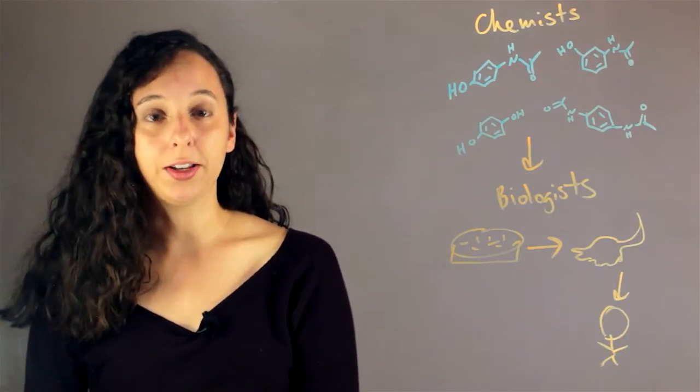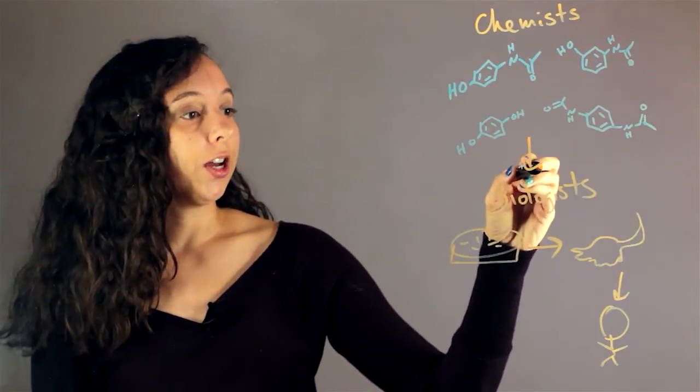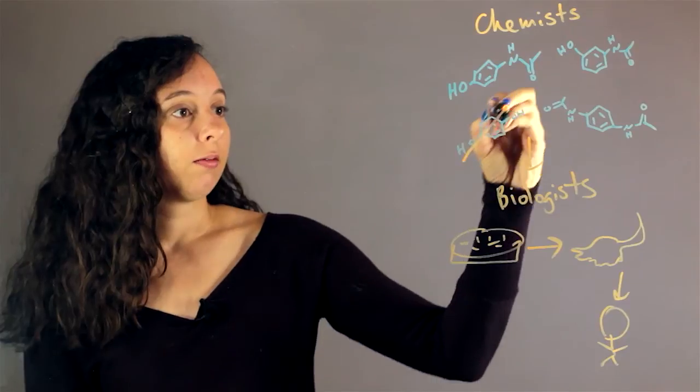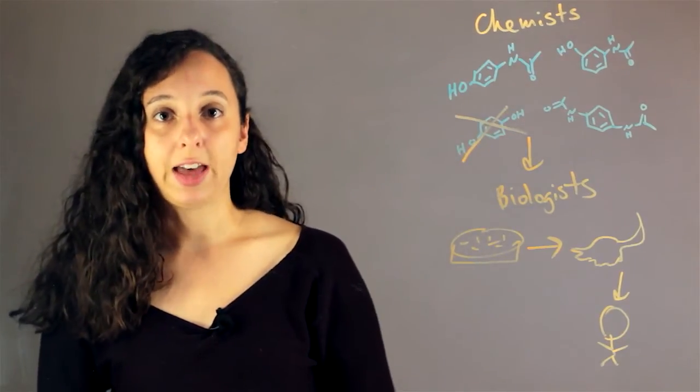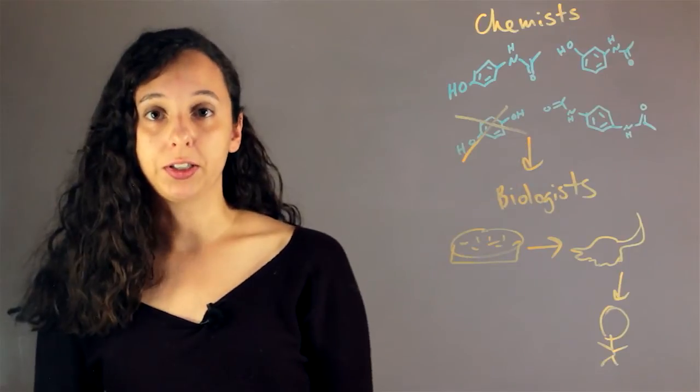So throughout all this process, the biologists are talking to the chemists. So maybe the biologists realize that this substance kills all the cells, so they get rid of that. And the chemists will then generate more or make a lot more of the ones that seem to work.